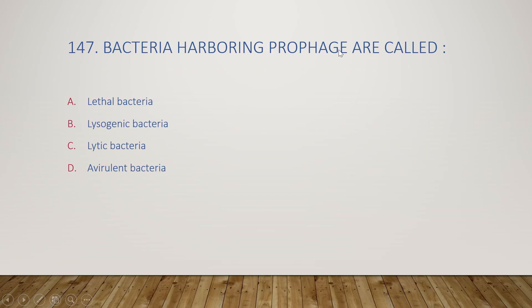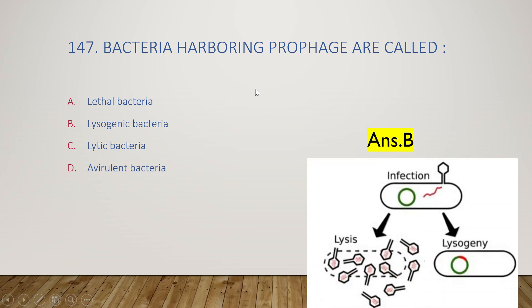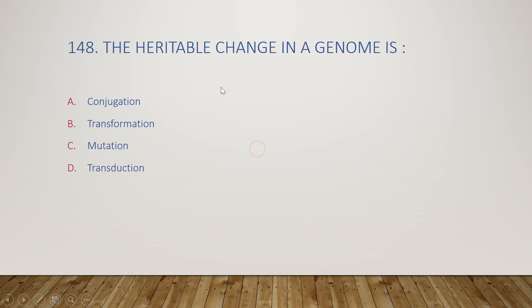The next question: bacteria harboring prophage are called lethal bacteria, lysogenic bacteria, lytic bacteria, or avirulent bacteria? The right answer is option B, lysogenic bacteria. In transduction, viral DNA is incorporated into the bacterial cell; if this viral DNA is incorporated into the bacterial genome, it is called a prophage and the process is called lysogeny. If viral DNA replicates independently, it goes through the lytic cycle.